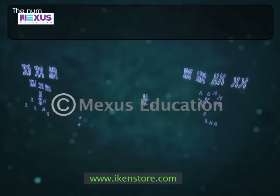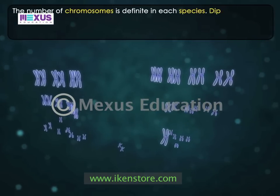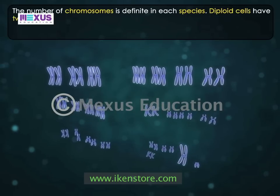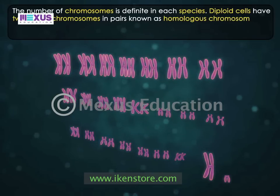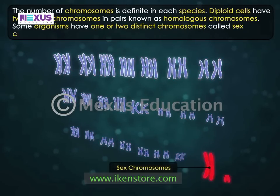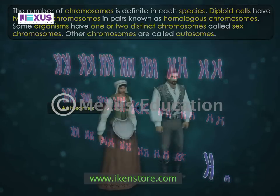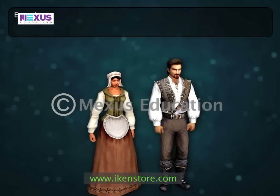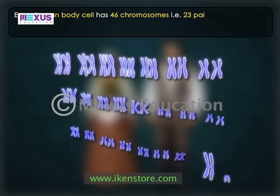The number of chromosomes is definite in each species. Diploid cells have two sets of chromosomes in pairs known as homologous chromosomes. Some organisms have one or two distinct chromosomes called sex chromosomes. Other chromosomes are called autosomes. Every human body cell has 46 chromosomes, that is 23 pairs.